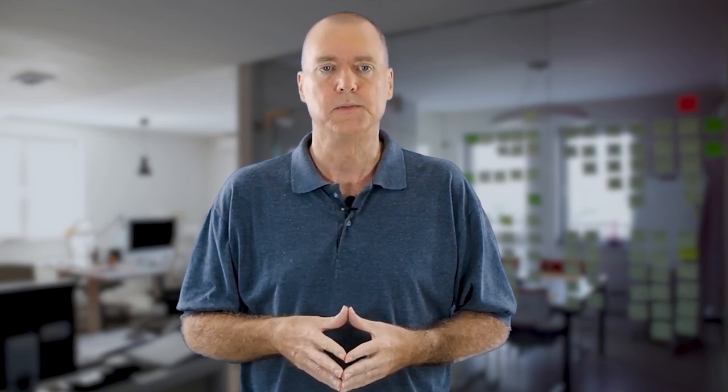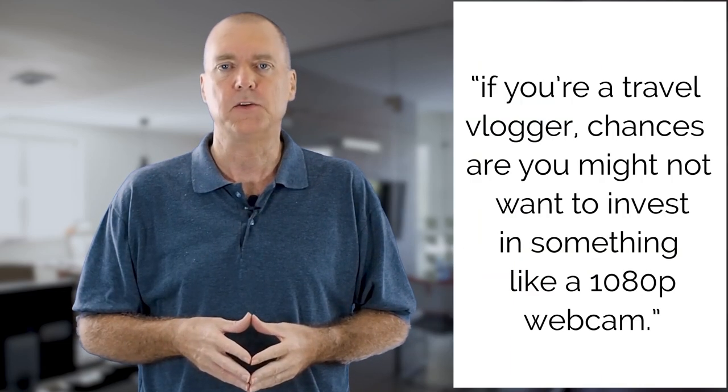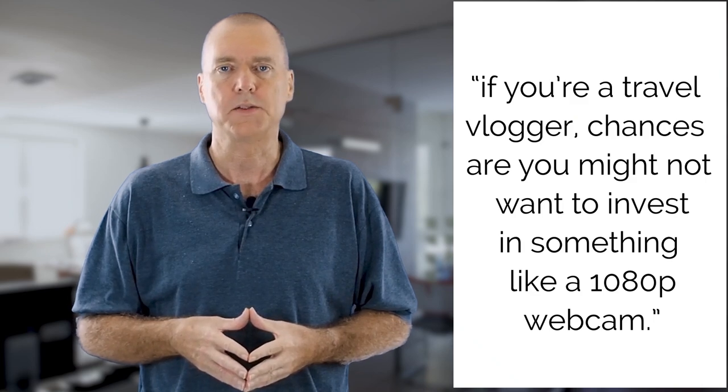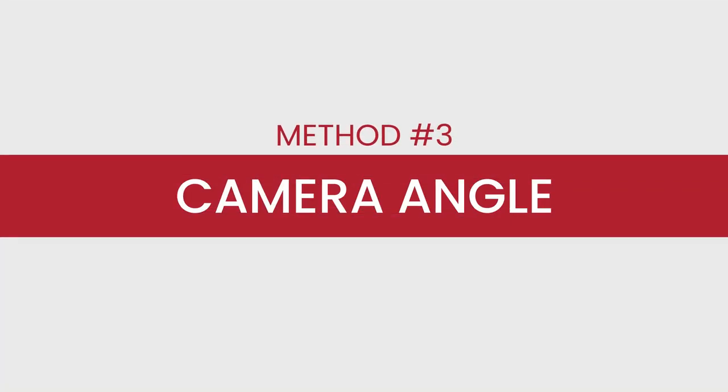Obviously this is all dependent on the type of videos you will be shooting. It goes without saying, if you're a travel vlogger, chances are you might not want to invest in something like a 1080p webcam. Now that we have a place to shoot and narrowed down what type of camera we're going to shoot with, we'll need to figure out where to put the camera. The options again are all dependent on the type of videos you'll be shooting. It'll be absolutely silly to buy a three-axis gimbal stabilizer for a review video. What I'm going to do is break down some free options as well as some DIY options for the basic stationary videos.